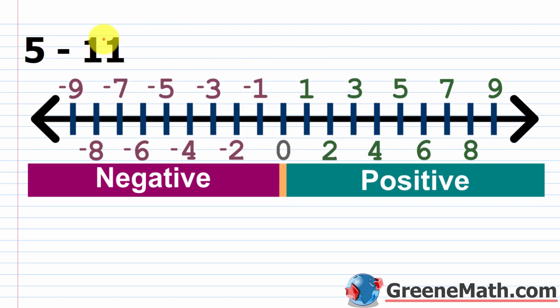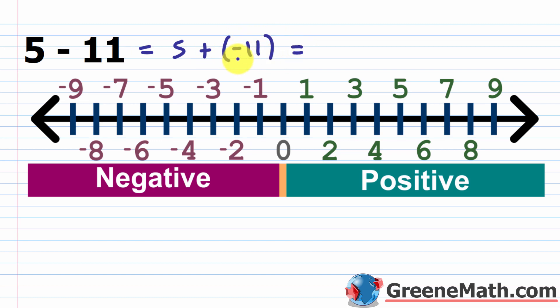Now let's look at 5 minus 11. If I have $5 and spend $11 worth of stuff, I overspent by $6 — spending $5 gets me to 0, then another 6 puts me at negative 6. Using the procedure: keep 5, change minus to plus, change 11 to its opposite, giving 5 plus negative 11. The absolute value of negative 11 is larger, so the result is negative. Then 11 minus 5 is 6, so the answer is negative 6.